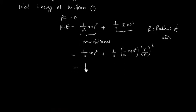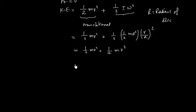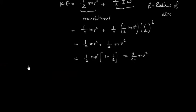So we can write... So R square cancels. So this is 3 by 4 MV square. So initial total energy is 3 by 4 MV square.